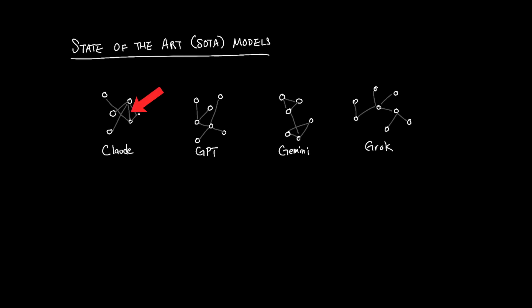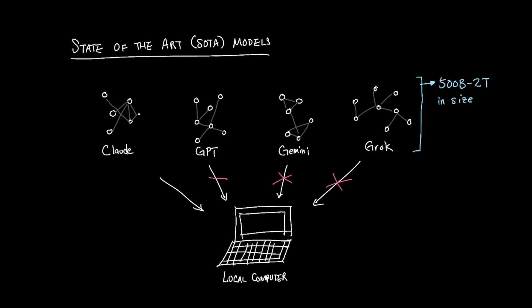We know that state-of-the-art models like Claude, GPT, Gemini, and Grok are sized at around 500 billion to 2 trillion parameters in size, which is something that consumers like you and me can never dream about running locally on our own machine.